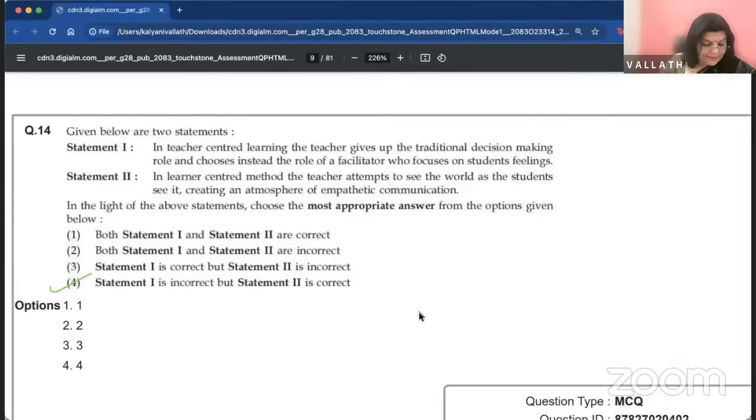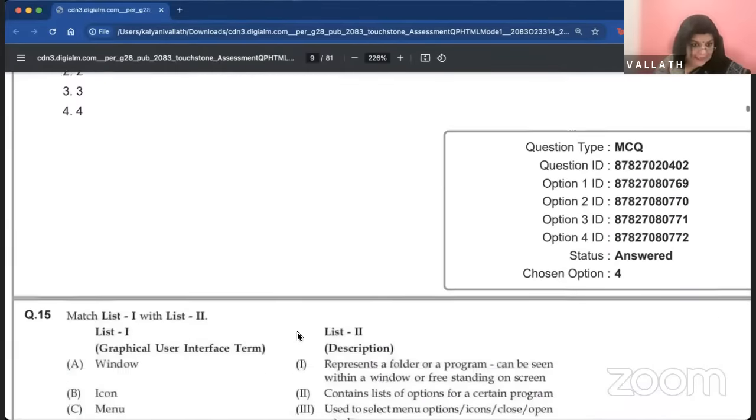The University of Punjab was established in Lahore to reduce the burden of the university. And which university did they want to reduce the burden of? Obviously, Calcutta University is established before Punjab. So, Calcutta. Given below are two statements. In teacher-centered learning, the teacher gives up the traditional decision-making role.